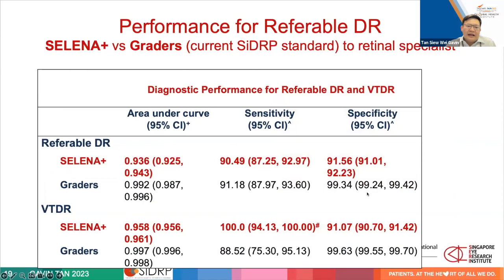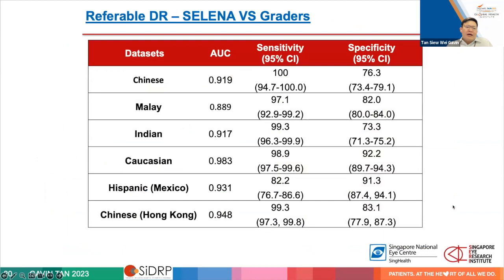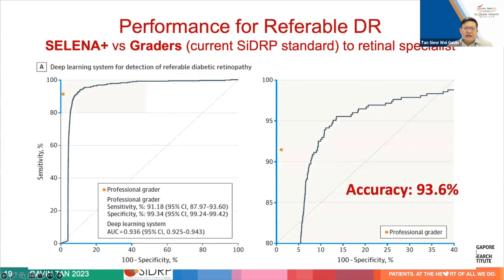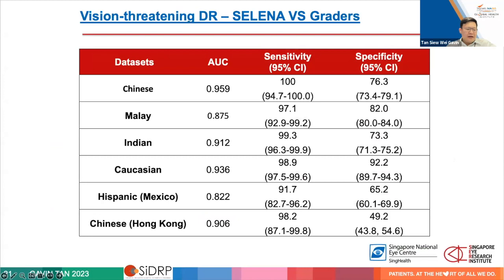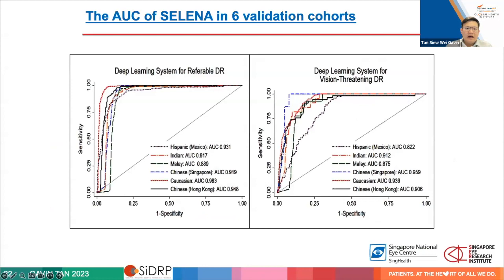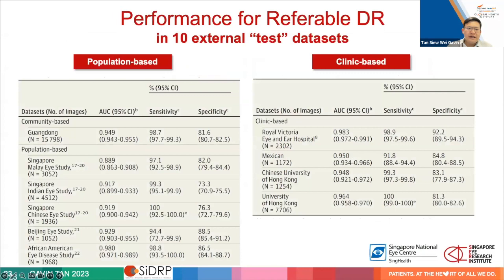We evaluated the AUC curve and asked whether certain groups performed better or worse. In our validation study, there was some variation by ethnicity, but the algorithm performed with pretty good consistency meeting a minimum standard, across mild and more severe forms of disease. We also validated it in external cohorts — including African Americans, Latinos from Mexico, and Caucasian populations from Australia — to ensure it could be applied outside Singapore. We also looked at performance across different camera types.